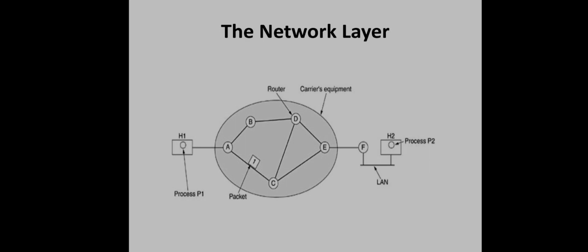Hello, welcome back. Now let us move on to the network layer. The network layer is concerned with getting packets from the source all the way to its destination, with many routers and hops in between. The data link layer is only concerned with moving frames from one end of the wire to the other. The network layer must know the topologies of the communication network and choose appropriate paths through the subnet to avoid overloading some paths while leaving others idle. In some cases the source and destination machines may be in completely different networks, which further complicates this work.